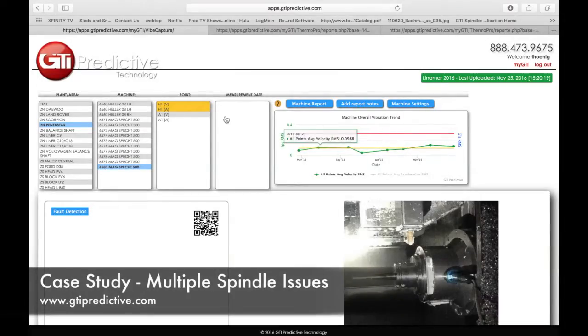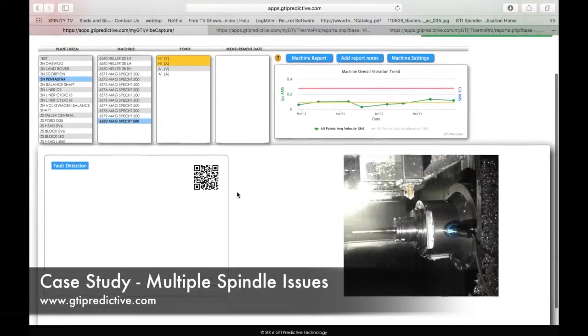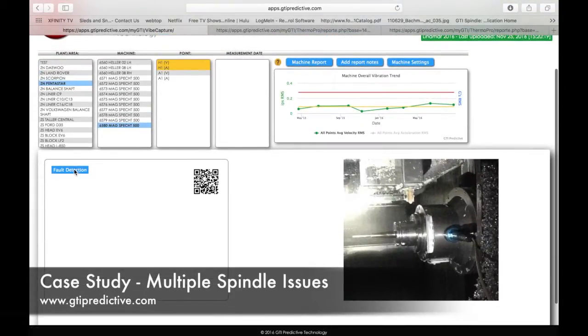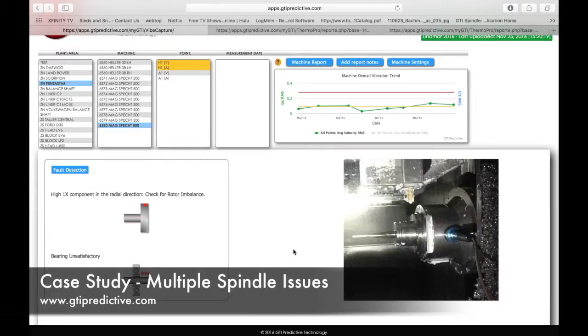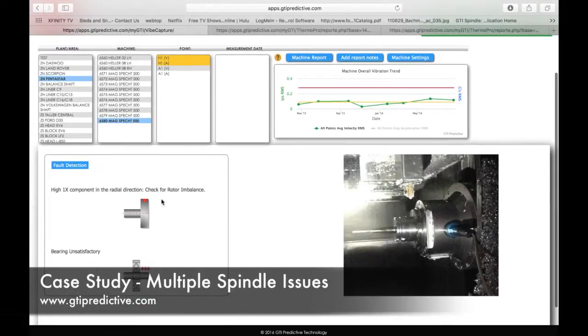You can see here we have two alerts in yellow, both velocity and acceleration. Let's depend on our fault detection engine and see what it says. In this particular case, it's not giving me one problem, it's giving me two.